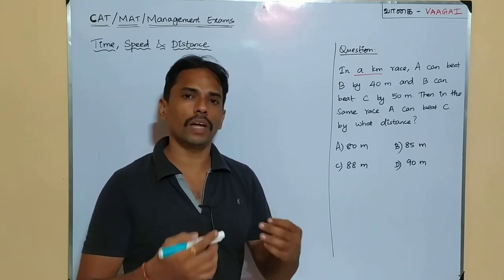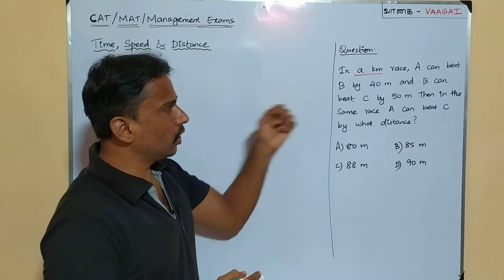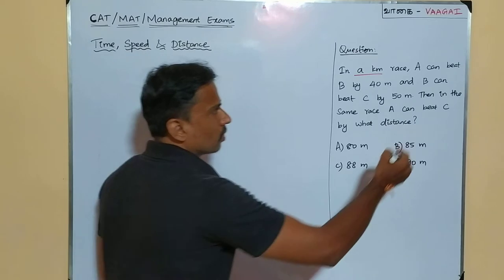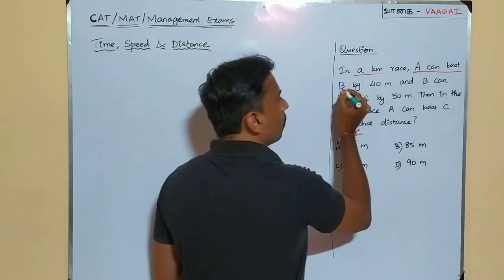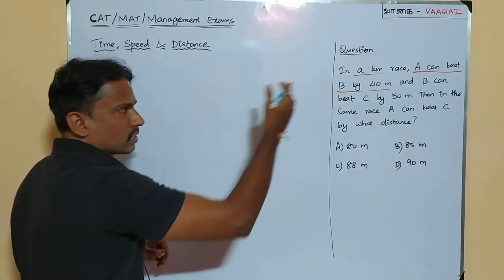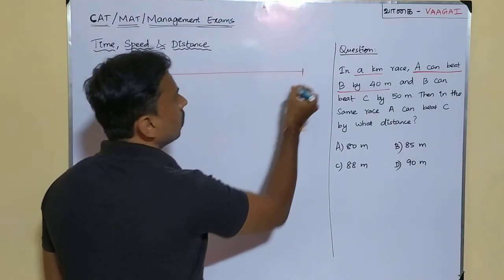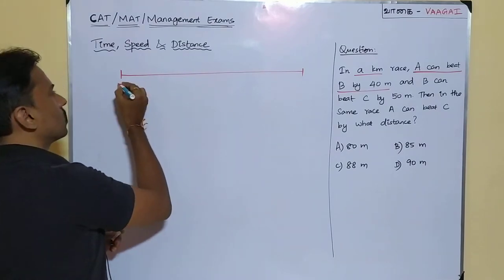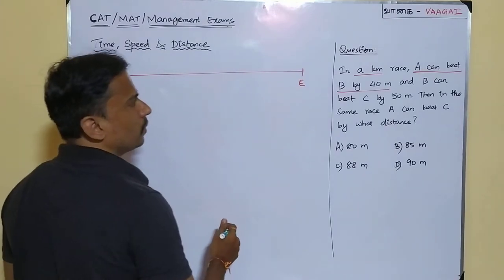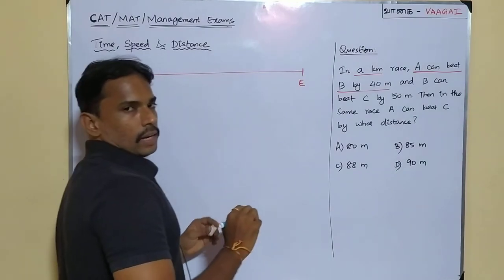First, let us note the information: in a kilometer race, A can beat B by 40 meters. What does that mean? The race track length is 1 kilometer. Let me draw the race track — here is the starting point and here is the ending point, and the length of this track is 1 kilometer.